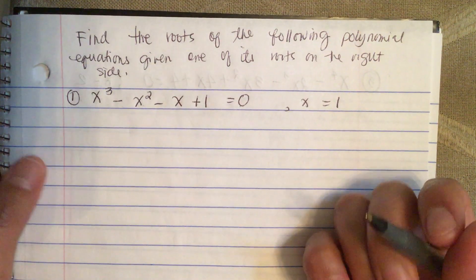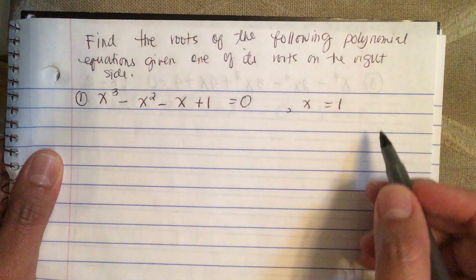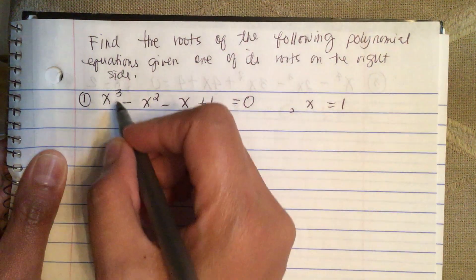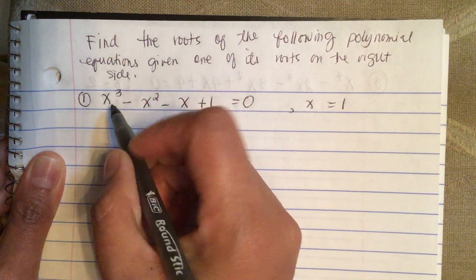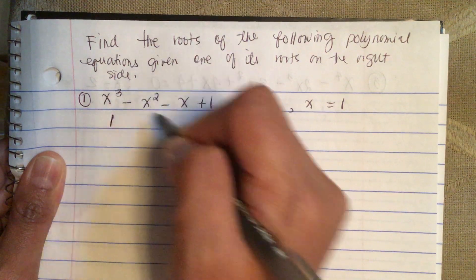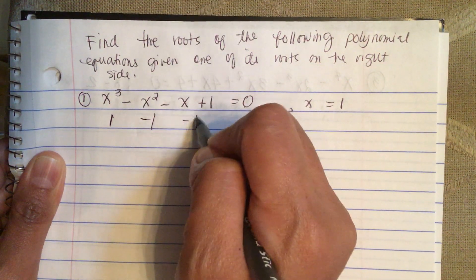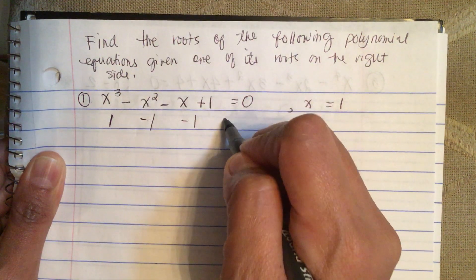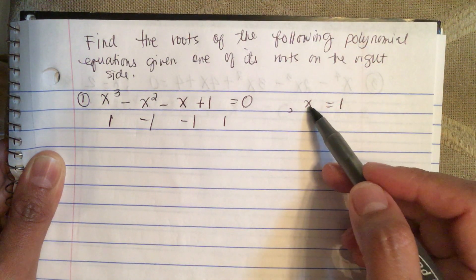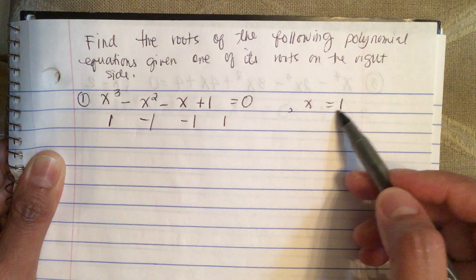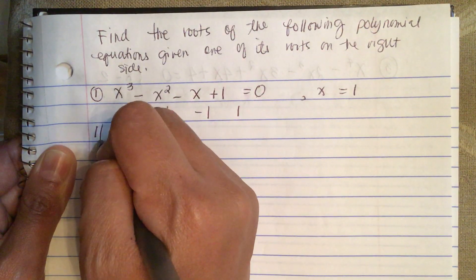We list the coefficients: we have 1, minus 1, another minus 1, and then a 1. They give us one of its roots, x is equal to 1, so let's put that in.